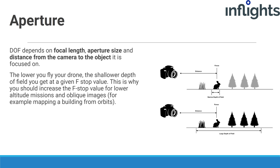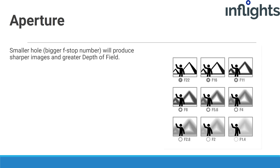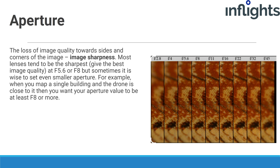For example, mapping building facades from orbits. It is worth mentioning that the in-focus area is not centered around the point you focused on — two-thirds of the depth of field area is behind where you focused, and one-third is in front. Smaller aperture holes, meaning bigger f-stop numbers, produce sharper images and greater depth of field. Depth of field is important for mapping uneven terrain such as cities with tall buildings, and for oblique images like orbits around a building. Shallow depth of field may cause parts of the image to be out of focus. Image sharpness — the loss of quality towards sides and corners — is also key. Most lenses are sharpest at f5.6 or f8, but sometimes a smaller aperture is wise. When mapping a single building close up, set aperture to at least f8 or more.